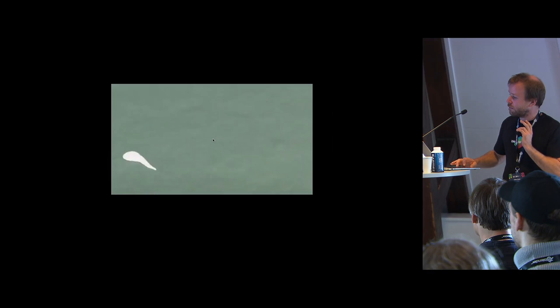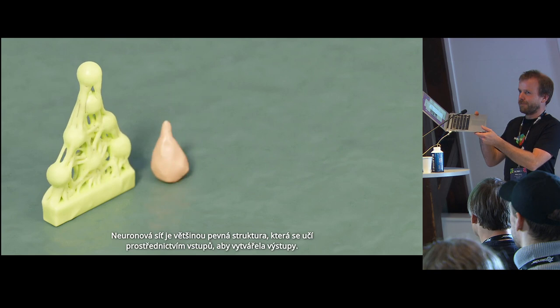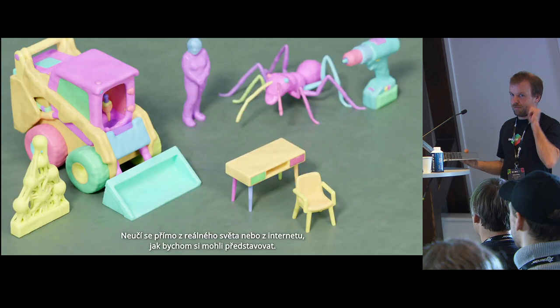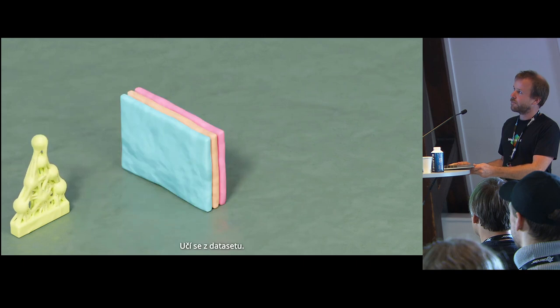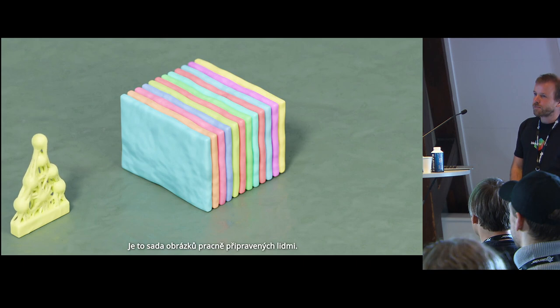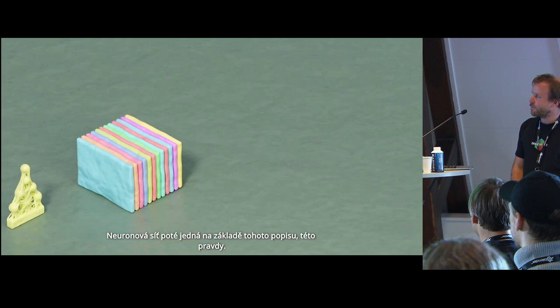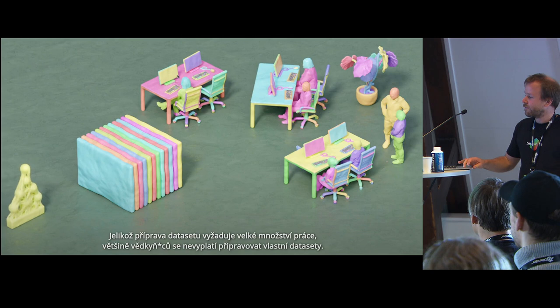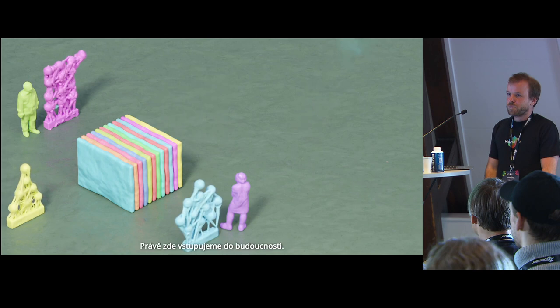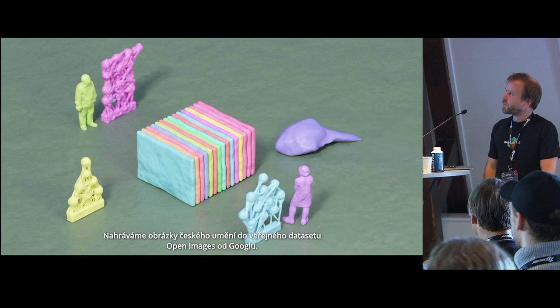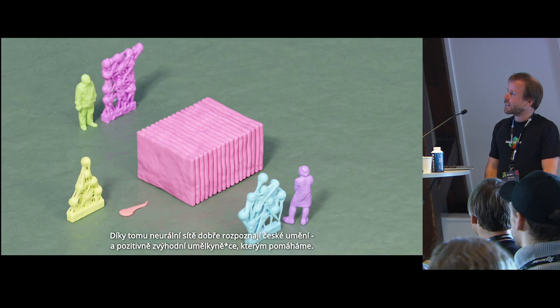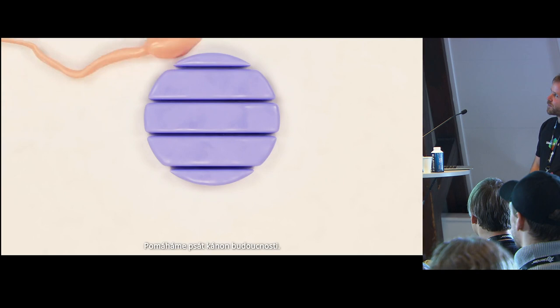A neural network is mostly a fixed structure that learns through input to produce outputs. It doesn't learn from the real world or just the internet like we would imagine. It learns from what's called a data set — a set of images laboriously prepared by humans. The data set contains a description of our world. The network then acts according to this truth. Because it takes a lot of people to make a data set, it doesn't pay most scientists to make their own data sets. They use public data sets. This is where we enter the future. We are enriching Google's Open Images public data set with images of Czech art.